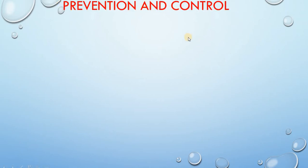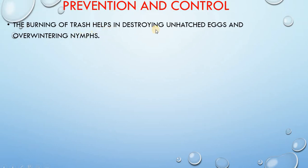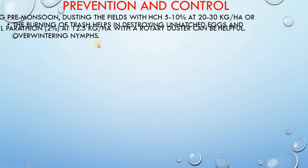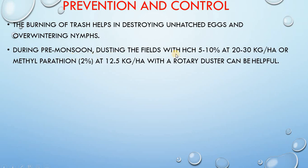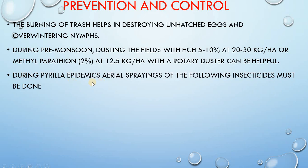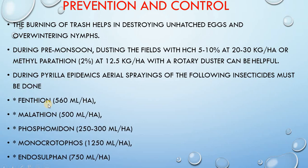Regarding prevention and control, burning of trash helps in destroying unhatched eggs and overwintering nymphs. During pre-monsoon, dusting the fields with HCH 5-10 percent at 20-30 kg per hectare, or methyl parathion 2 percent at 12.5 kg per hectare with a rotary duster can be helpful. During Pyrella epidemics, aerial spraying of the following insecticides must be done: Phantheon 560 ml per hectare, Malathion 500 ml per hectare, Phosphomidon 250 to 300 ml per hectare, Monocrotophos 1250 ml per hectare, and Endosulfan 750 ml per hectare.